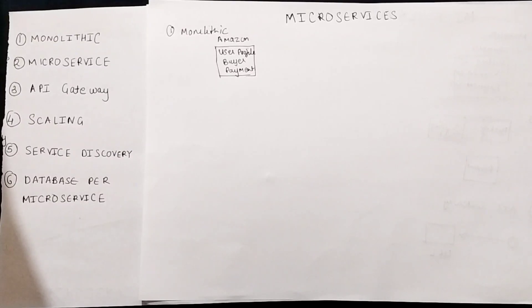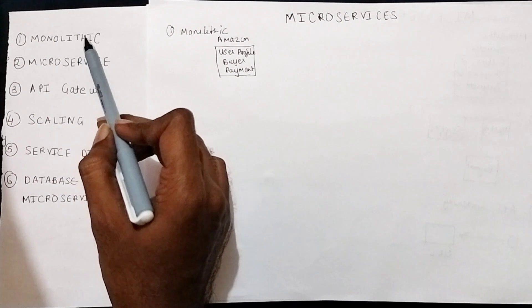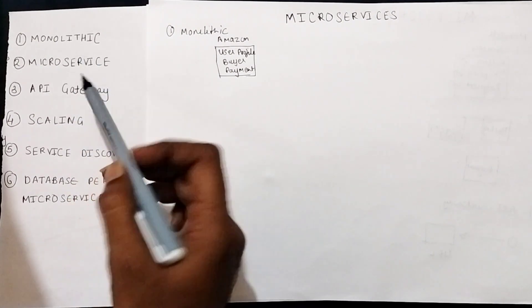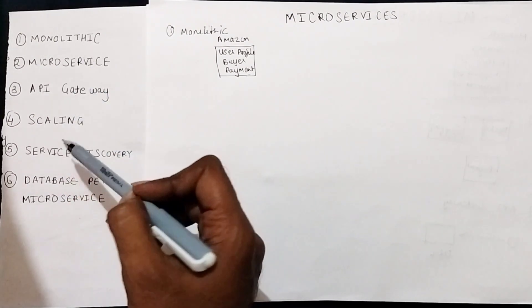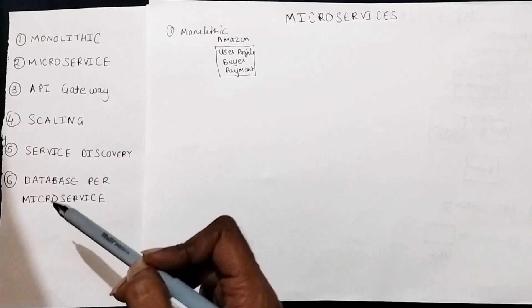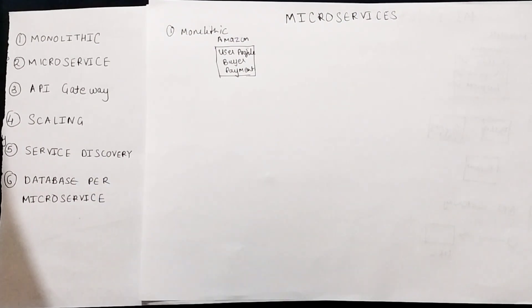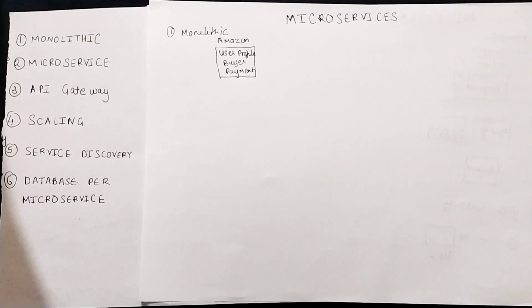Hi guys, welcome to Cloud Tech. Today we are going to discuss about microservices. This is going to be an exciting lecture and we are going to discuss six topics: what is a monolithic application, what are microservices, what is API gateway, how to scale a microservice, what is service discovery, and how do we use databases for each microservice. Let's get into our first topic — what is a monolithic application.